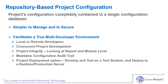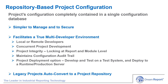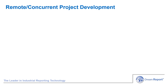For customers using both the development system and a separate production system, the new project deployment option allows you to develop and fully test the reporting project independently of the production system, and then deploy the project to the production or runtime system when ready. Any legacy DreamReport projects will be automatically converted after prompting the user to the new configuration database. It's up to you then whether you want to develop your project in the traditional way or use the project repository, which we'll cover next.